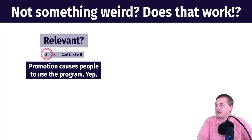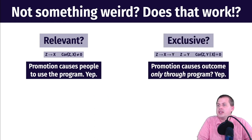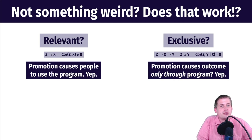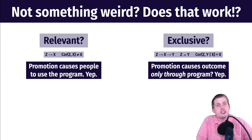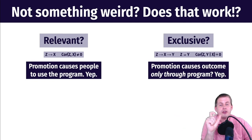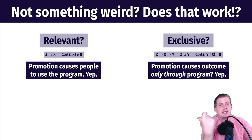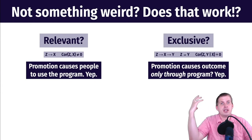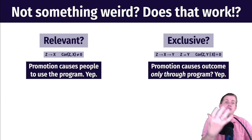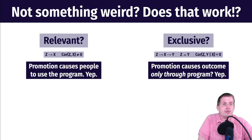Encouragement leads to voter registration — it causes people to sign up. Second, exclusivity: promotion causes an outcome only through the program. If the outcome is actual voting and the program is voter registration, then encouraging somebody to vote leads to voting only through registration — there's no other node. It's a clear exclusive pathway: you encourage someone to vote, they register, then they do it.